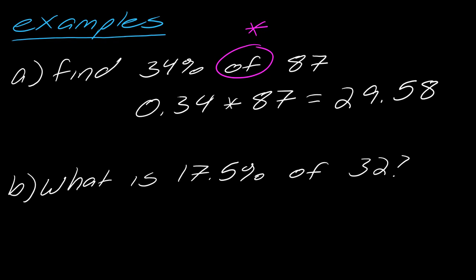If I did that again for B, it's literally the same idea, just a slightly different way of asking the same question. What is 17.5% of 32? So that's going to be 0.175 times 32. If you multiply those together, you will get 5.6.